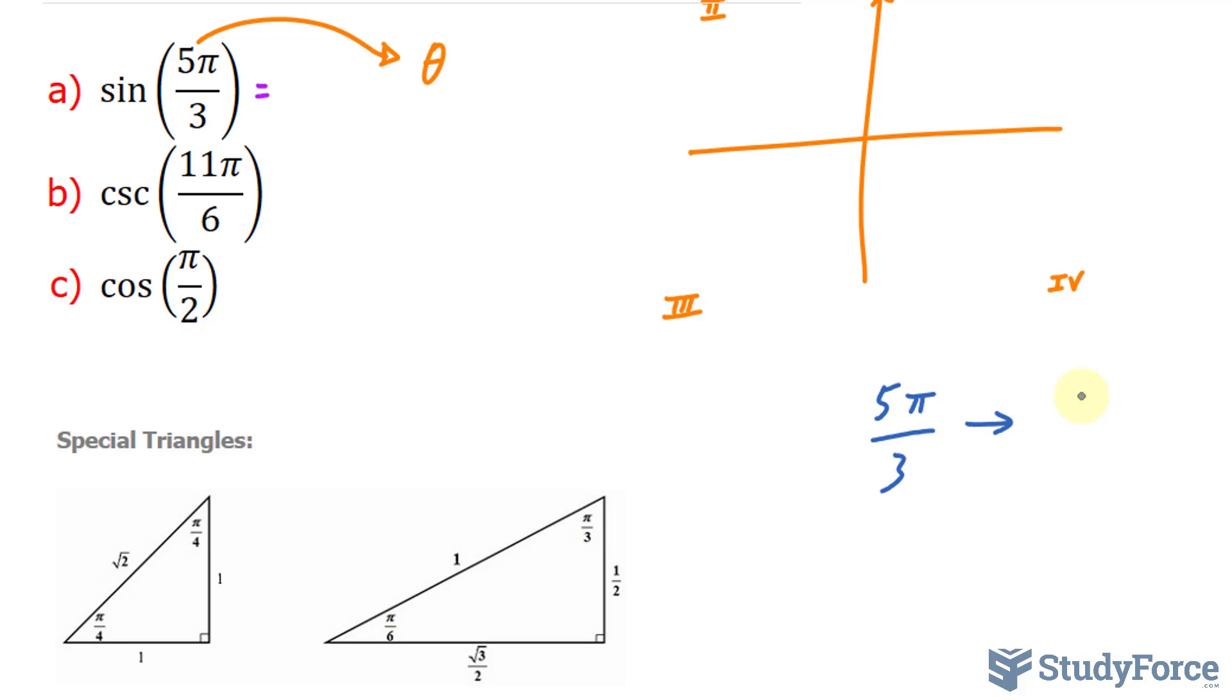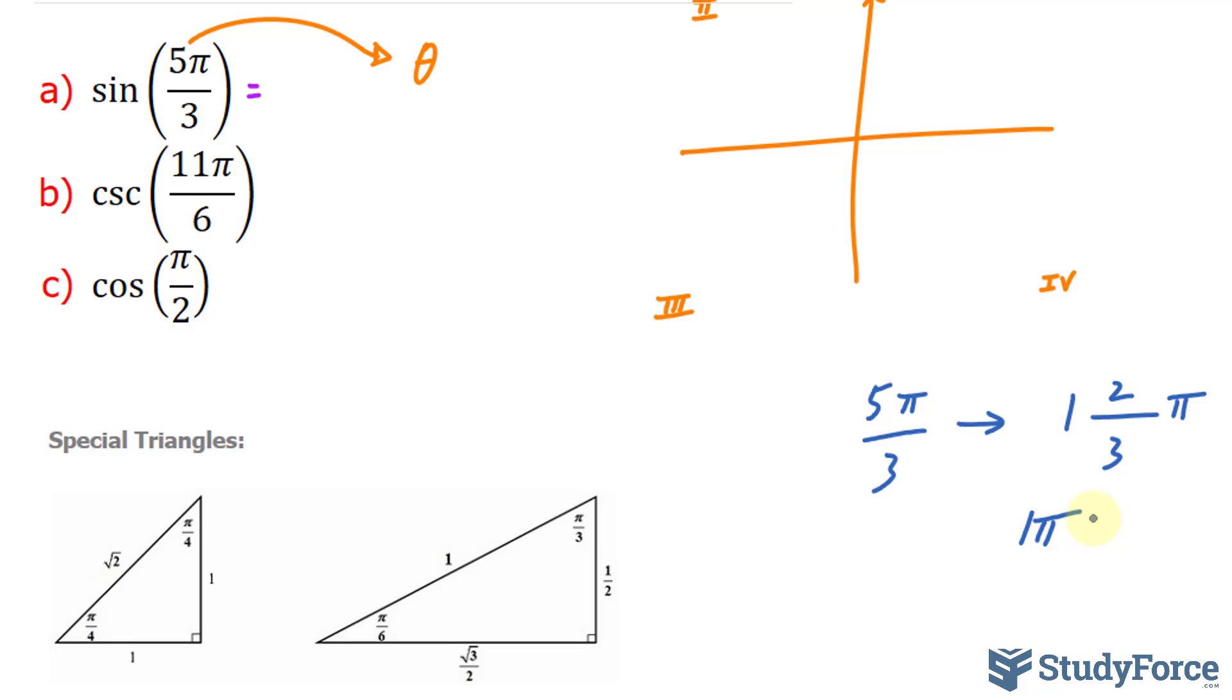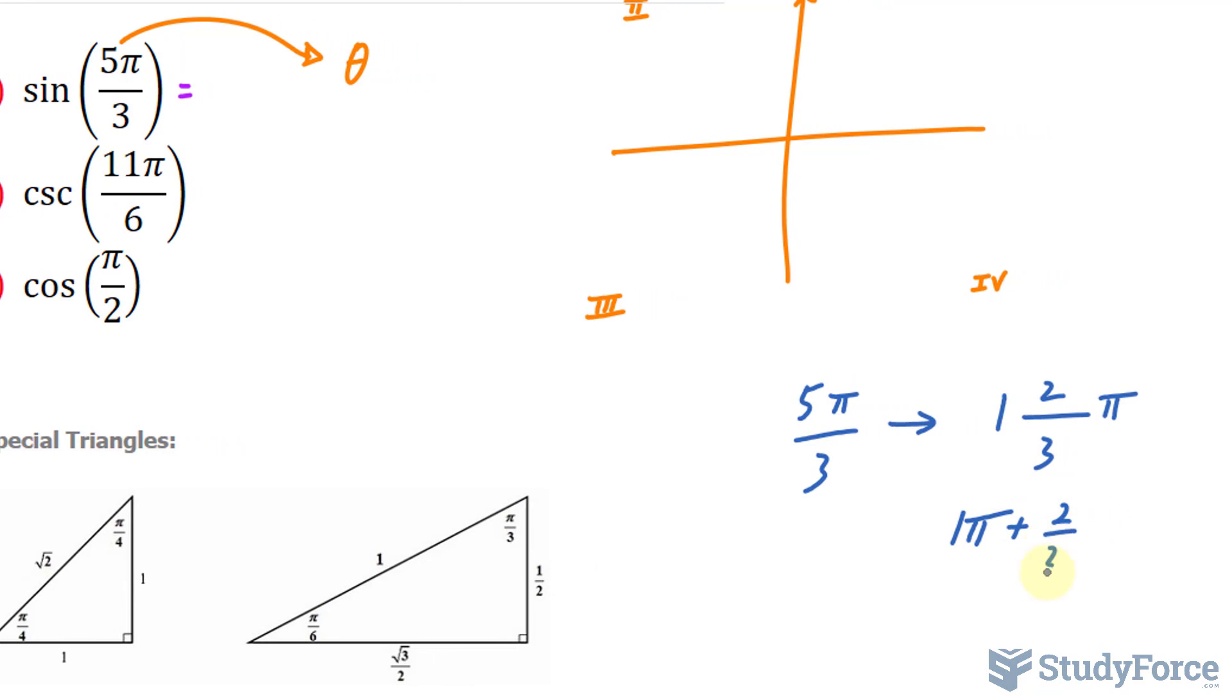3 fits into 5 once. And when you convert an improper to a mixed, you keep the denominator the same. 3 times 1 makes 3, 3 plus 2 gives us 5. Therefore, 5π over 3 is the same thing as 1 and 2/3 π. And this can be written or interpreted as 1π plus 2 over 3π.